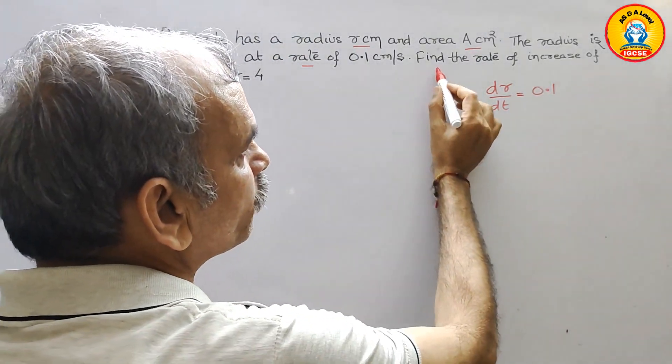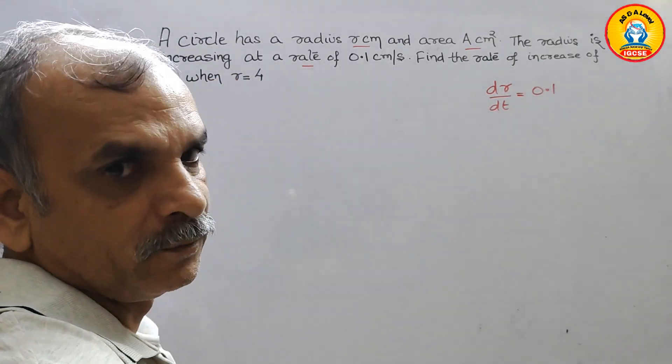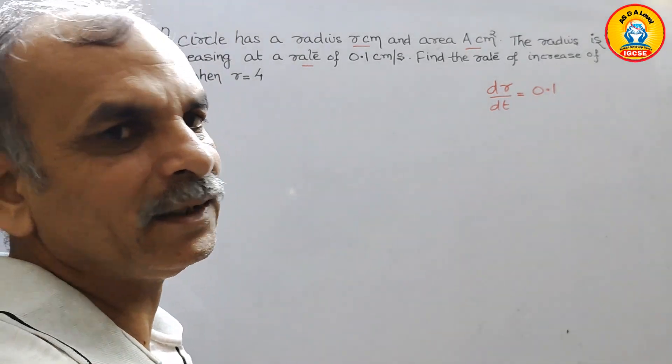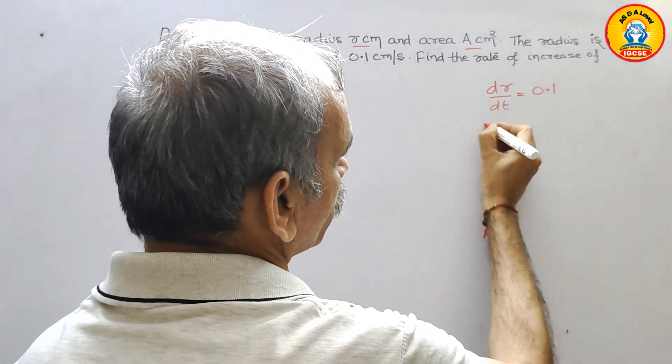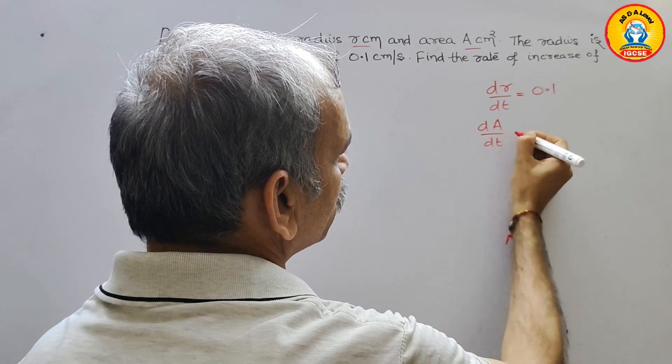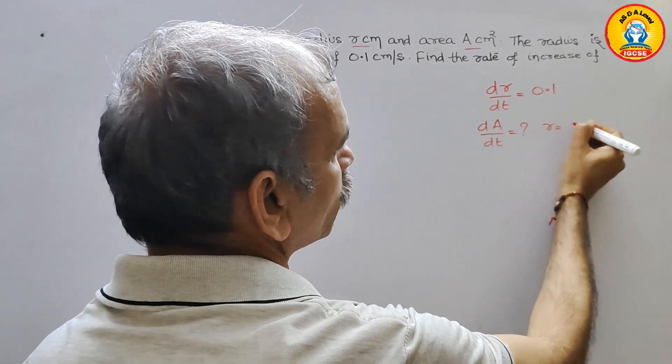Next they have told we have to find out rate of increase of area. So that means we have to find dA by dt when r is equal to 4.